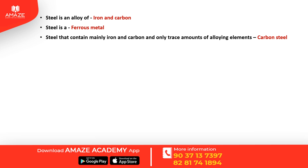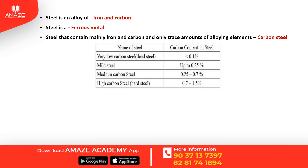Carbon steel has iron and carbon as its major content, with some amount of alloying elements. Depending upon the percentage of carbon, the types are: very low carbon steel (dead steel) with carbon content less than 0.1%; mild steel up to 0.25%; medium carbon steel 0.25–0.7%; and high carbon steel or hard steel 0.7–1.5%.